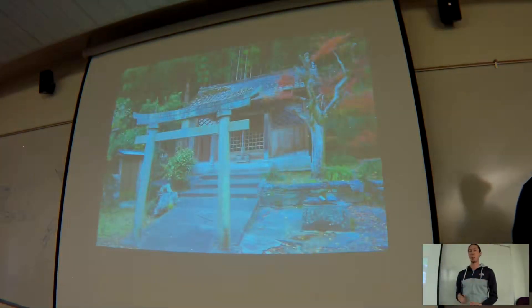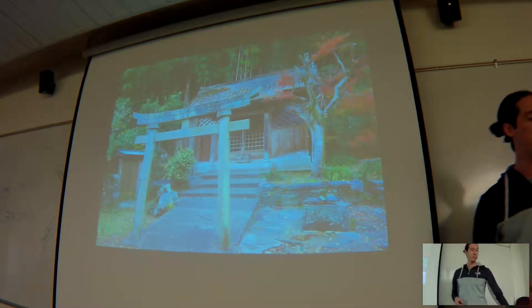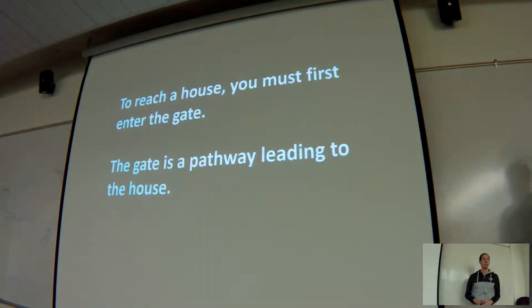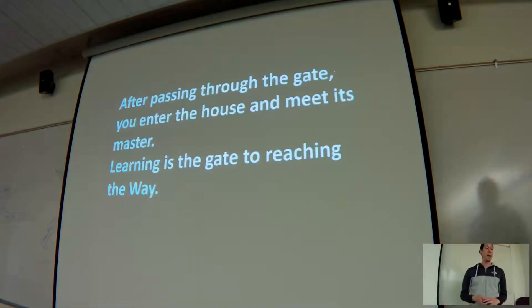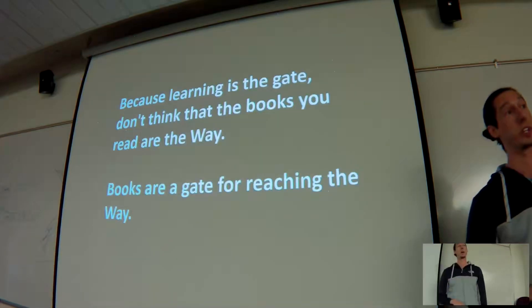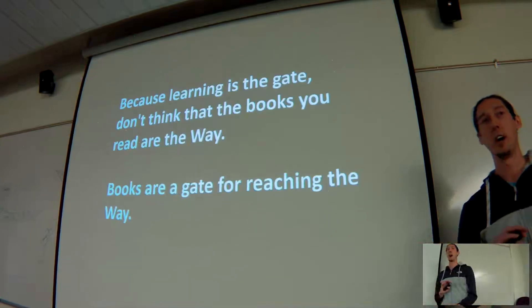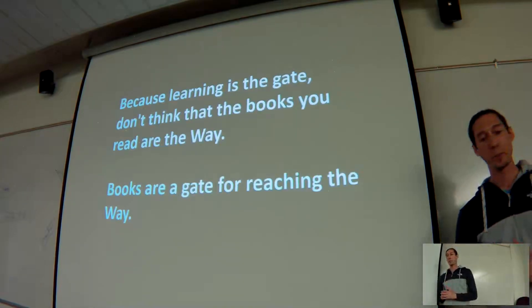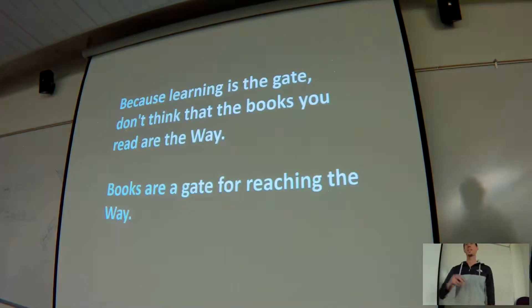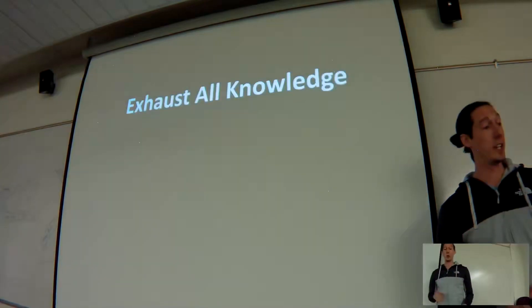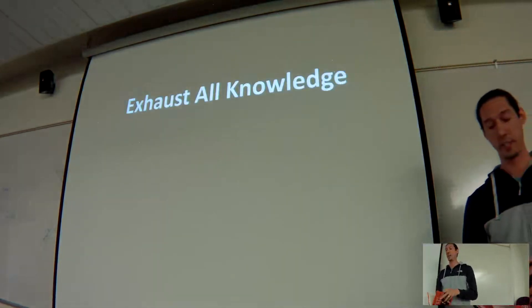And then there's two really important concepts within this book that I thought were awesome. And one of them is about obtaining knowledge and mastery of anything. And so I'll run through this really quick and then I want to read a quick passage from the book. But it says, to reach a house, you must first enter the gate. The gate is a pathway leading to the house. After passing through the gate, you enter the house and meet its master. Learning is the gate to reaching the way. Because learning is the gate, don't think that the books you read are the way. Books are a gate for reaching the way. And so this is like a good example of how pithy but meaningful a lot of like these Asian texts could be. I just love that, that the act of learning is just part of the process. And to get to that point where you have real wisdom, you can essentially, you know, you need to differentiate those two things.